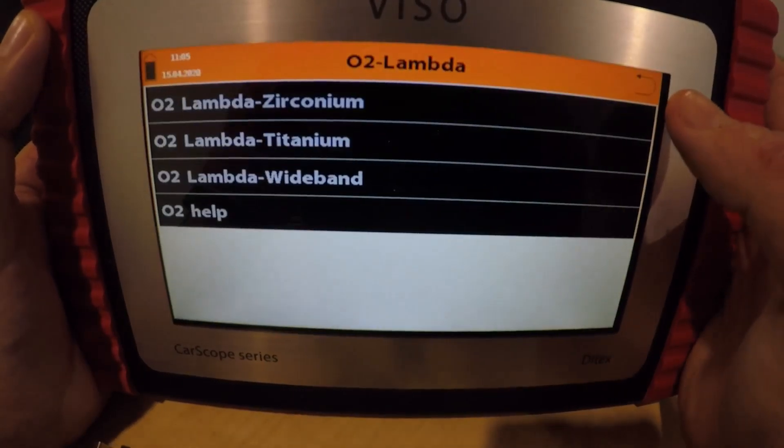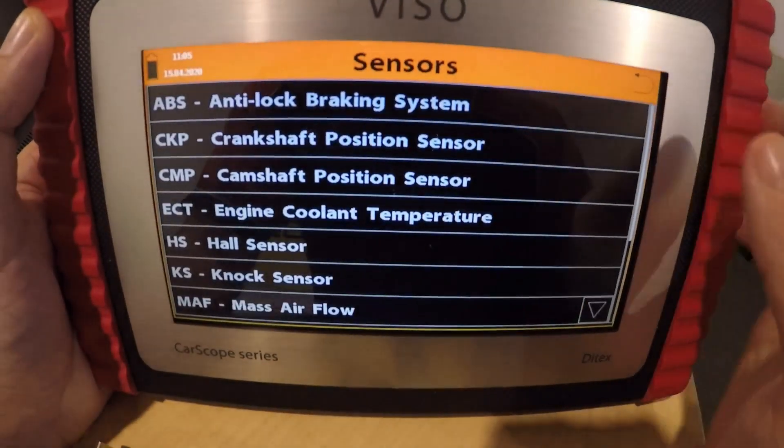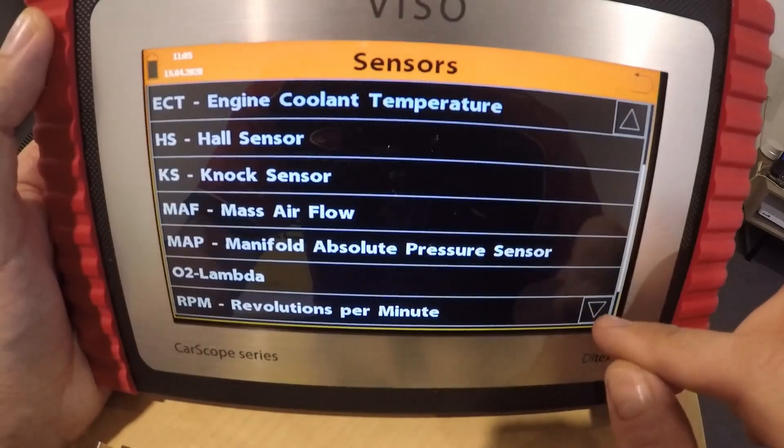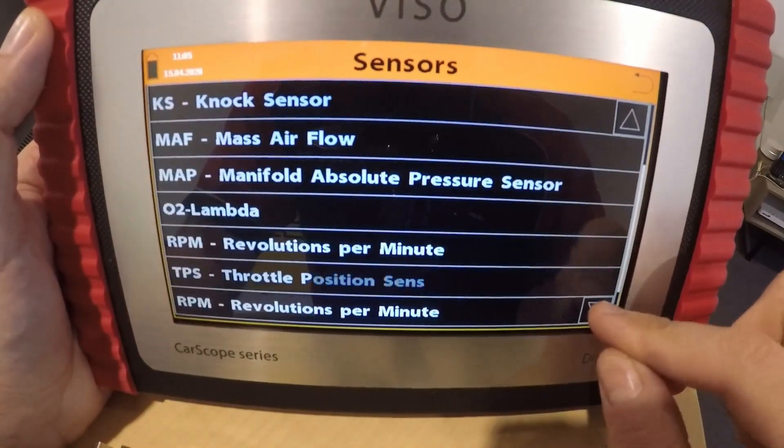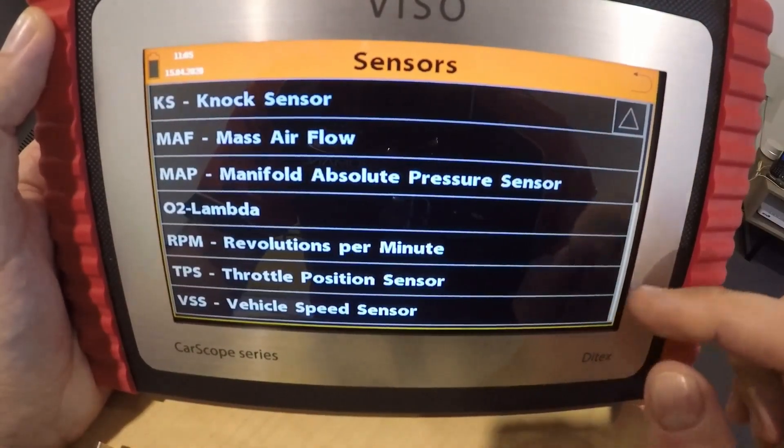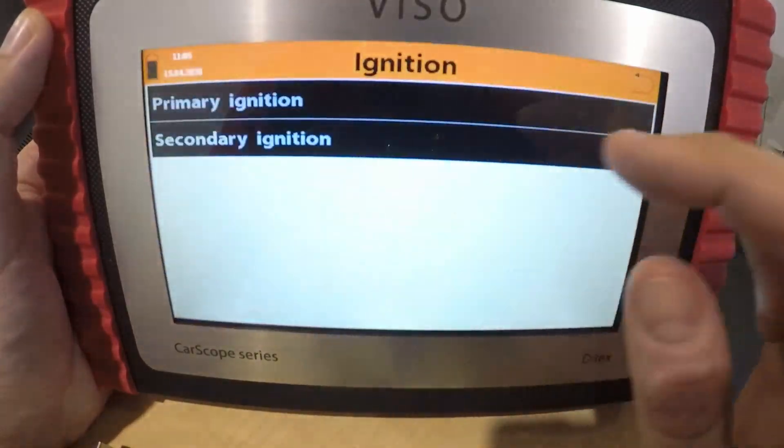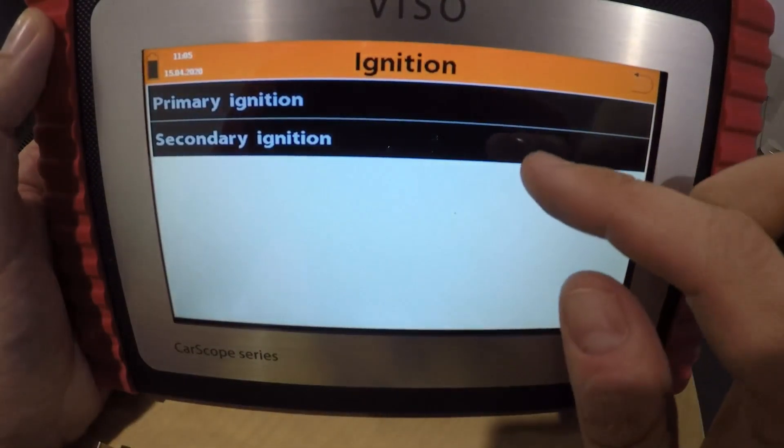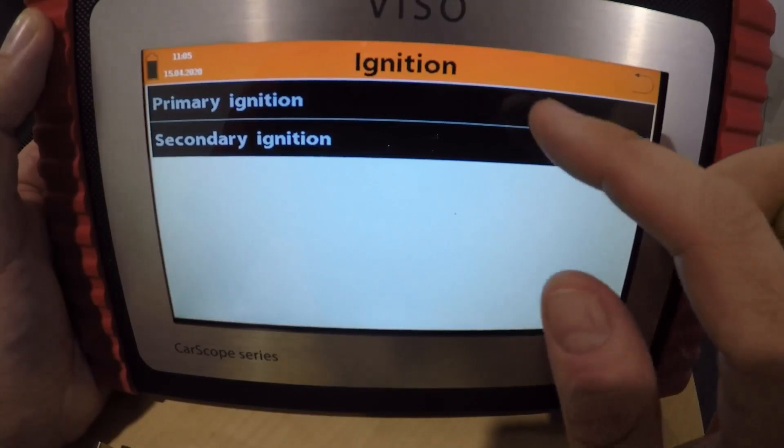All right, let's get out of that. So we got RPM, vehicle speed sensor, excellent. Let's go back to ignition. Let's see, we've got primary and secondary. Also awesome.